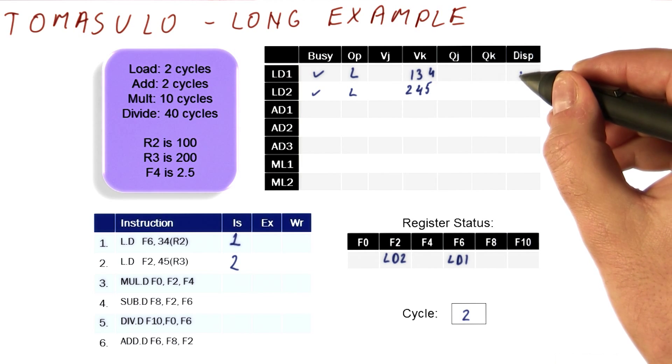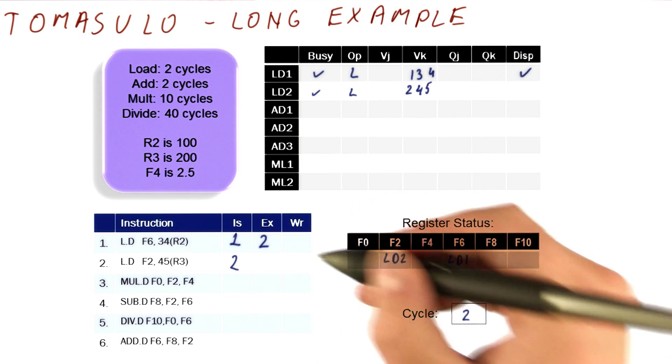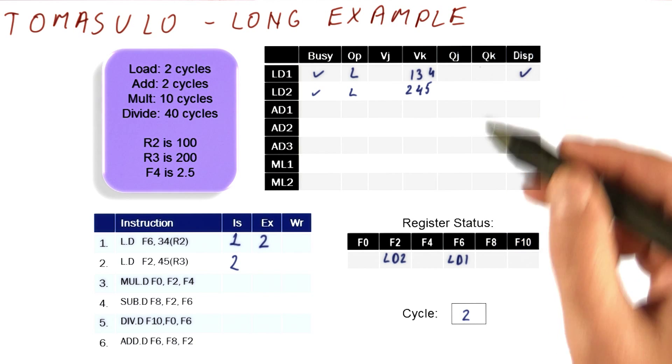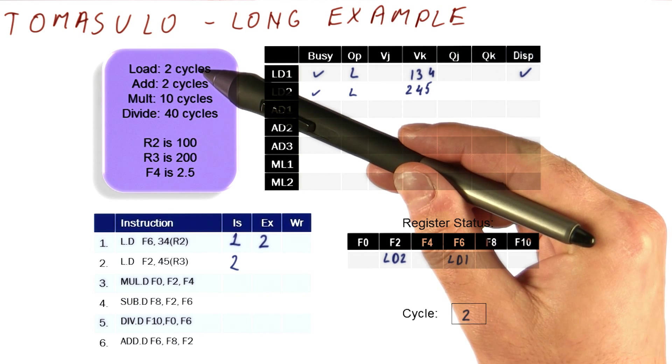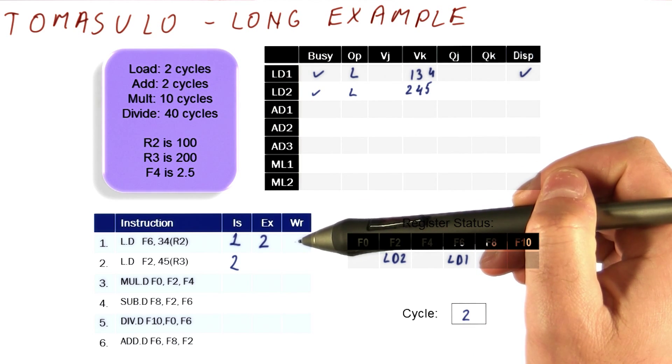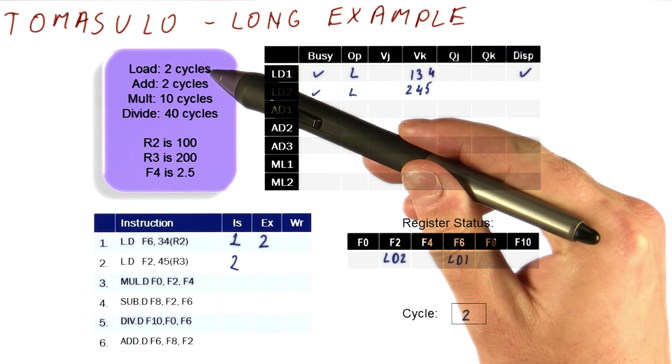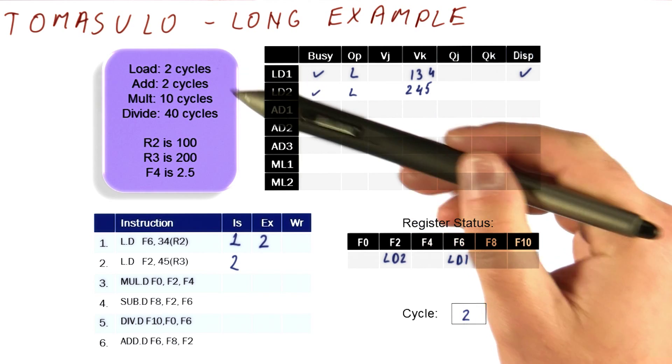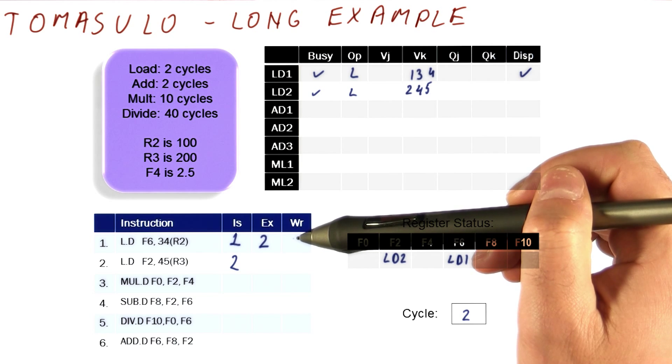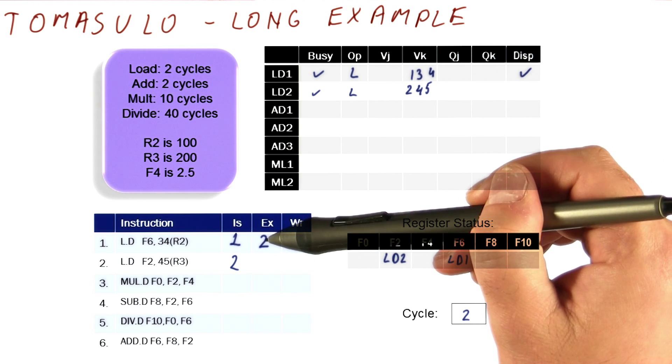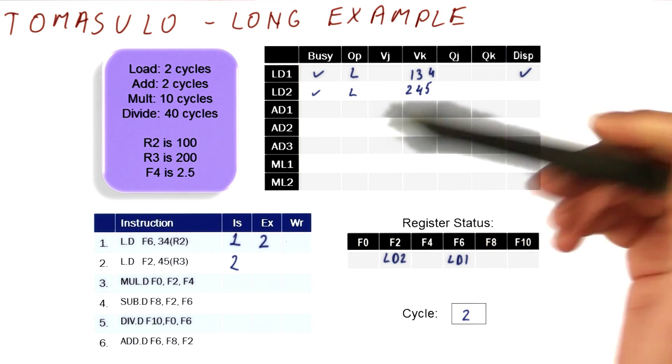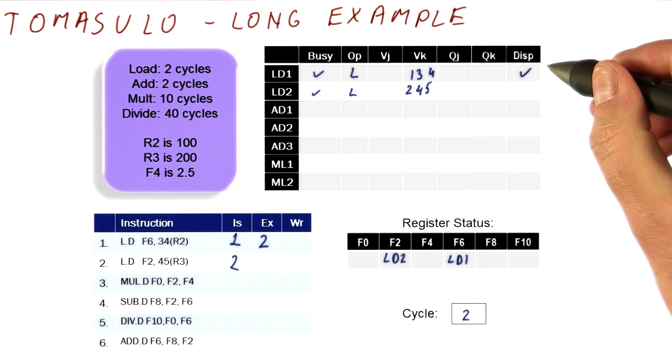We will dispatch this load now. Its execution begins in cycle two because everything is ready for it. Now we need to consider, it takes two cycles to do a load. Does the write back happen at the end of the second cycle, or does it happen in the cycle after that? In this case, we will assume that the write back happens after the execution is done. So the execution of the load will be done in cycles two and three, and the write back will happen in cycle four. We will be able to write in cycle four.